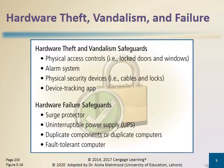This slide summarizes techniques to safeguard hardware from theft, vandalism, and failure. Hardware theft and vandalism safeguards include physical access control by keeping doors and windows locked, using alarm systems, and using security devices like cables and locks. Device tracking applications can also be used. Hardware failure safeguards include using surge protectors, uninterrupted power supply, duplicate components or computers, and fault-tolerant computers.